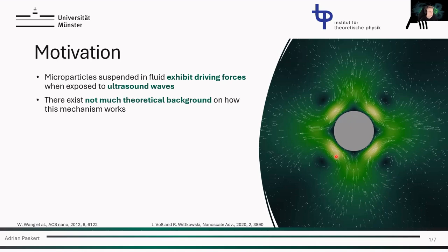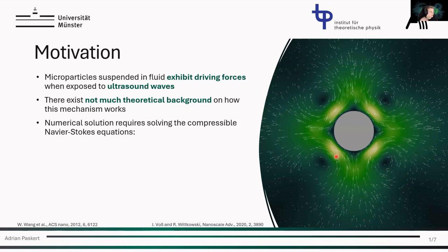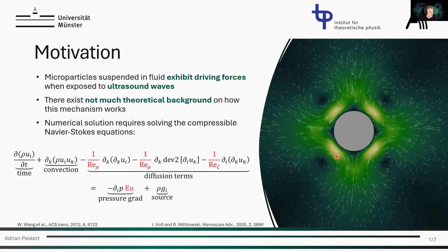The theoretical background for this is really difficult as long as you want to study particles that have a complex shape. You can do analytical approximations for very simple shapes like spheres or cylinders, but as soon as you want to do something more complicated, you have to do it numerically. To approach this from a theoretical background you need to consider the compressible Navier-Stokes equation, which I've displayed here, and as you can imagine, solving this numerically can get quite complex very quickly.